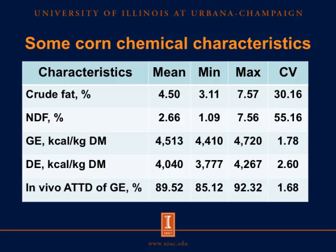This table shows some of the chemical characteristics of the corn samples. Among the chemical characteristics that were analyzed, the concentration of crude fat and NDF have the greatest coefficient of erasure. From the table, we see that the average concentration of crude fat is 4.5%, with a range of 3.11 to 7.57%, with a coefficient of erasure of 30.16%.